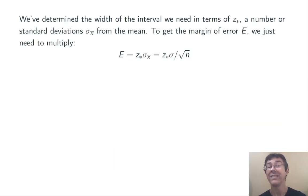Now we know the width of the interval we need in terms of z-star, the number of standard deviations that we should go above and below the mean. To get a margin of error, we just need to multiply that by the standard deviation of the sample mean. So our margin of error should be z-star sigma over the square root of n.